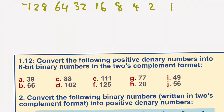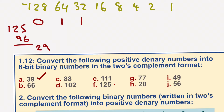If I take F, 125. We've got 1 of those, 1 of those, so that's 96. What have we got left? 29. 1 of those, 13 left, 1 of those, 5 left, 1 of those, 1 of those, 1 of those. The answer is 125.